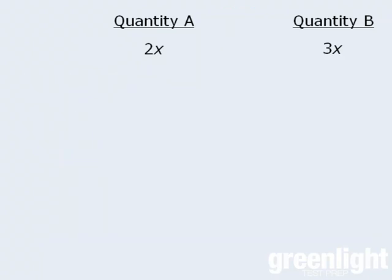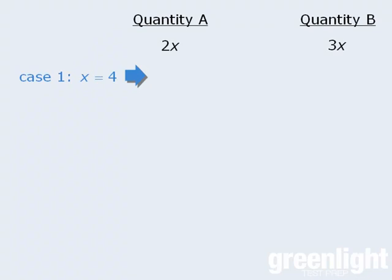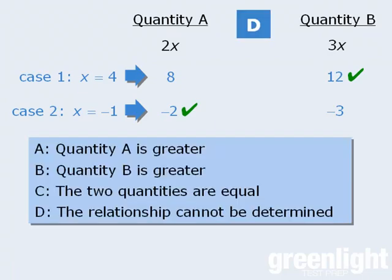To demonstrate this, let's look at some possible values of x. For example, what does our comparison look like if x equals positive 4? In this case, quantity A equals 8 and quantity B equals 12, which means quantity B is greater. Now consider what happens if x equals negative 1. In this case, quantity A equals negative 2 and quantity B equals negative 3, which means quantity A is greater. So in one case quantity B is greater, and in the other case quantity A is greater. As such, the correct answer here is D — the relationship cannot be determined.